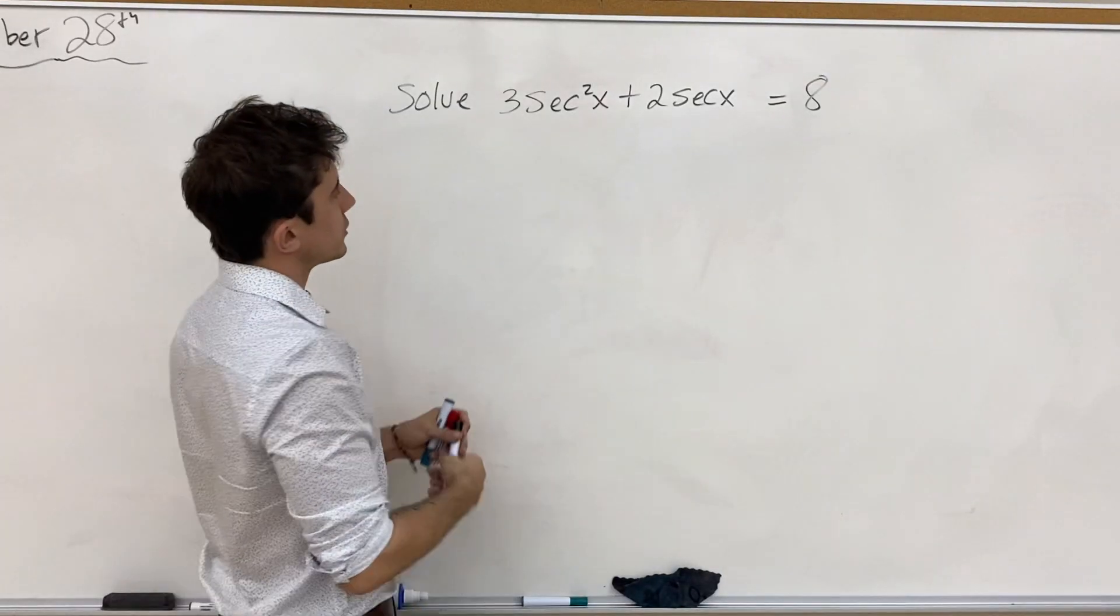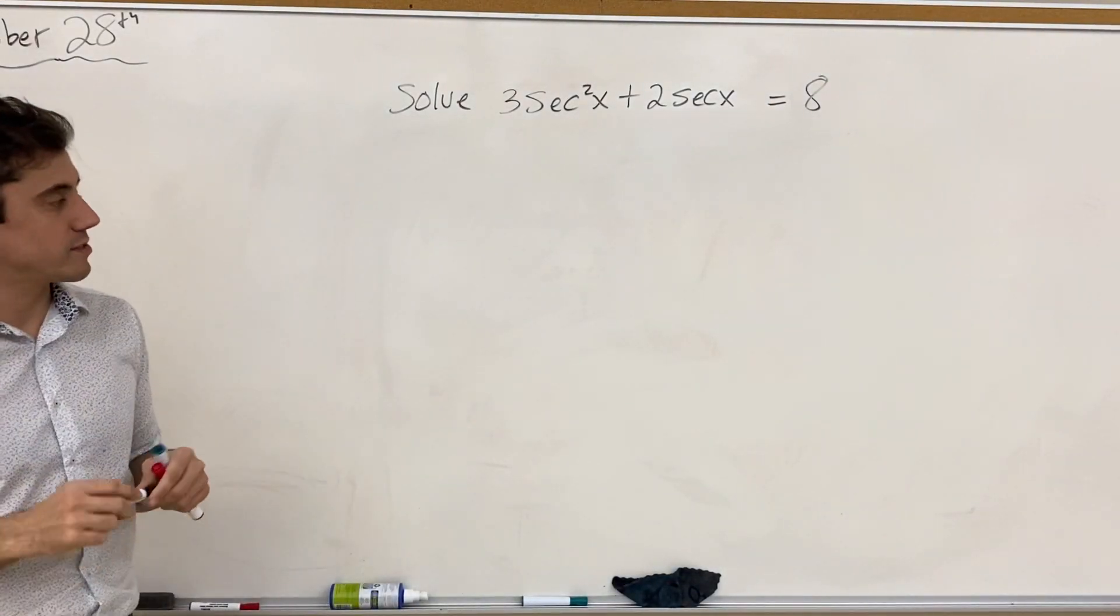Good afternoon, everyone. Today we're going to solve a trig equation of the form 3 secant squared x plus 2 secant x is equal to 8.